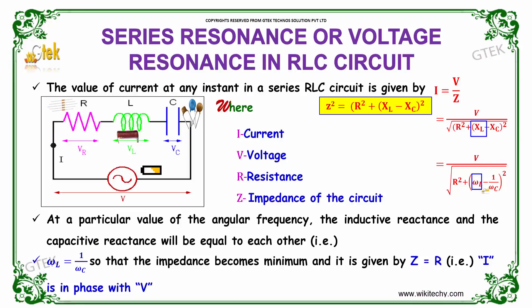XL can be replaced as omega L and XC can be replaced as 1 by omega C. We get the final equation as I equals V divided by root of R squared plus omega L minus 1 by omega C whole squared.